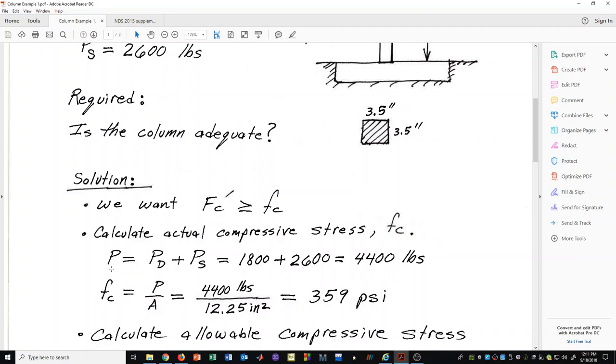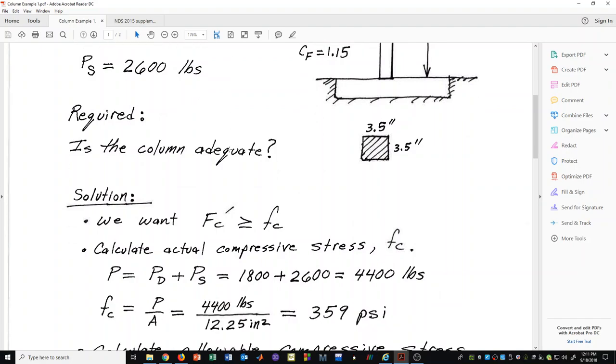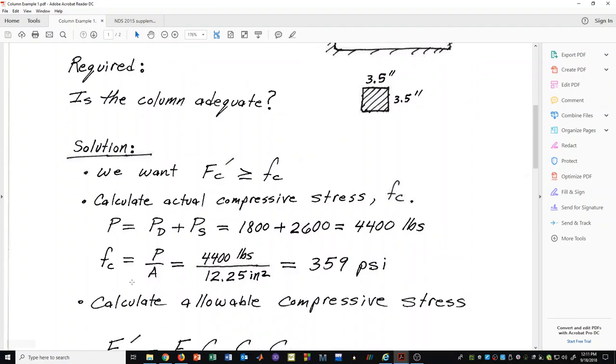We need to have the total load. It will be P sub D plus P sub S and we are adding those together according to one of the allowable stress design load combinations. If you were to look at those load combinations, you would find that the worst one we could use based on the only loads provided in this particular problem is dead plus snow.